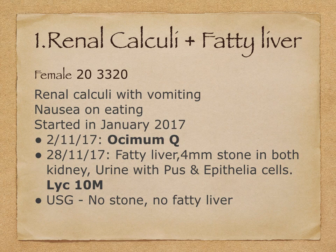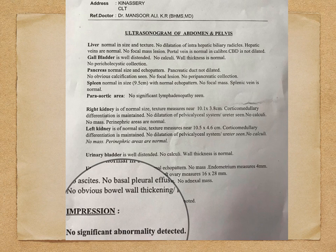The USG showed fatty liver and a 4 mm stone in both kidneys, urine with pus and epithelial cells. After relieving the pain, we prescribed the remedy Lycopodium tannum. We again conducted the USG, and in that USG there was no stone and no fatty liver. See the impression: no significant abnormality detected after one dose of Lycopodium tannum.